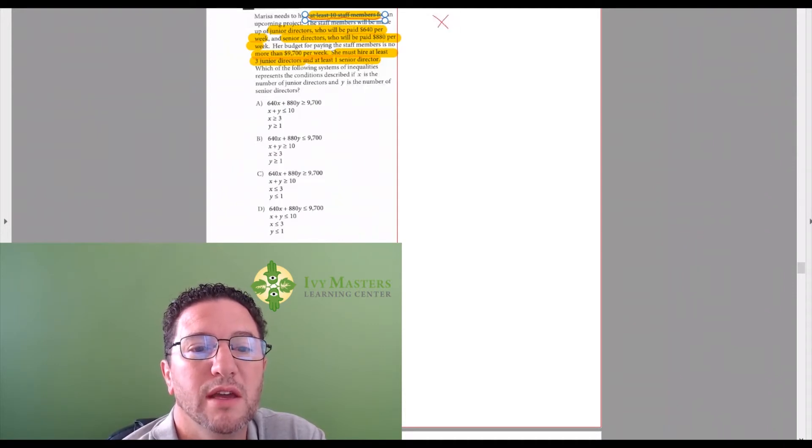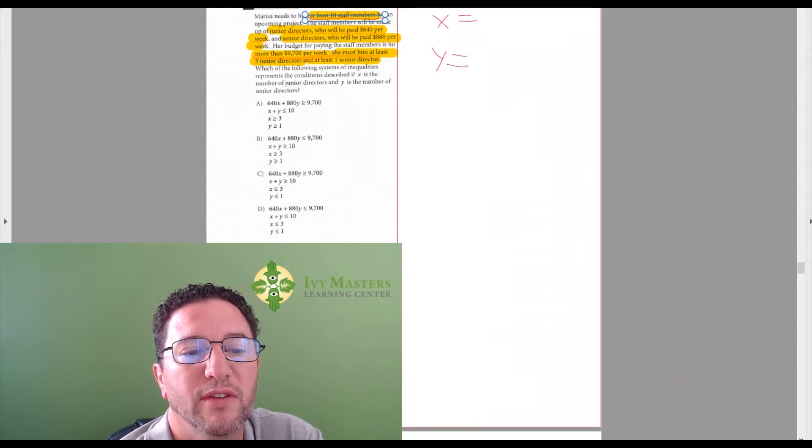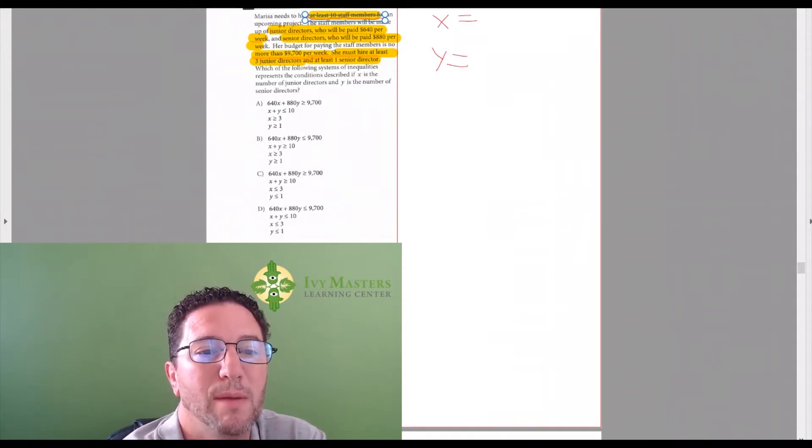So it looks like X and Y are your junior and senior directors. And we don't even have to say who's junior and who's senior just yet. If it's at least 10 staff members, then X plus Y has got to be greater than or equal to 10.